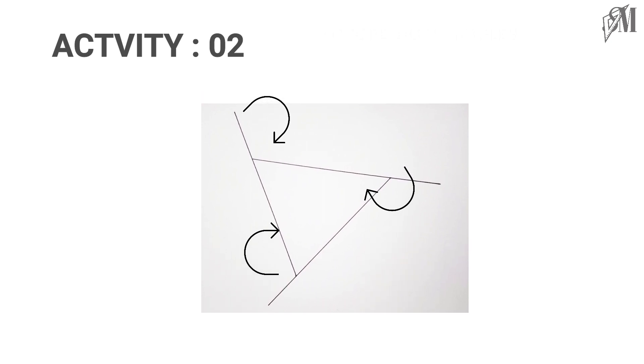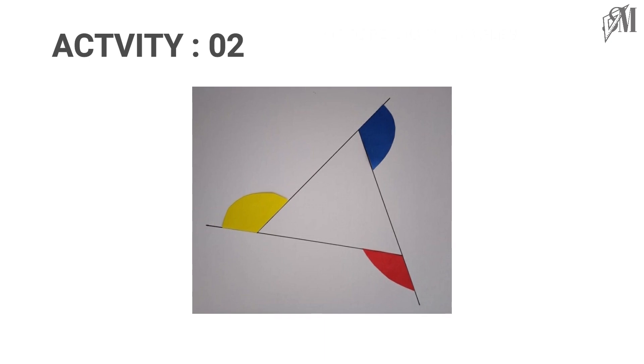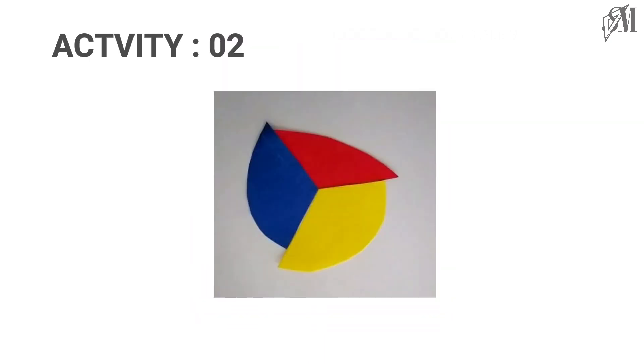Then I give colors to these exterior angles as red, yellow, and blue. Next, take these angles and arrange closer to one another. They beautifully arrange around a point showing us they sum up to 360 degrees.